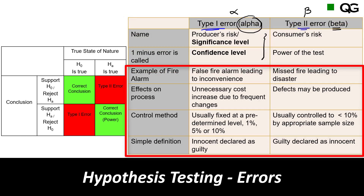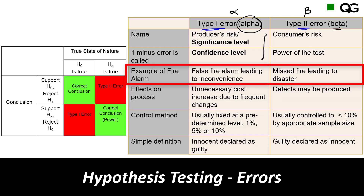In the case of a fire alarm in a building, Type 1 error is a false alarm: there is no fire, but you hear the fire alarm, you evacuate the building and call the fire brigade. That is Type 1 error. Type 2 error, on the other hand, means there is a fire but the fire alarm failed to detect it — which could lead to disaster, making it very serious.